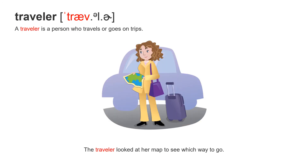The next word is traveler. Traveler — accent on the first syllable. A traveler is a person who travels or goes on trips. The traveler looks at her map to see which way to go. Traveler.